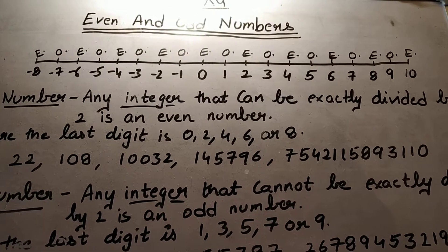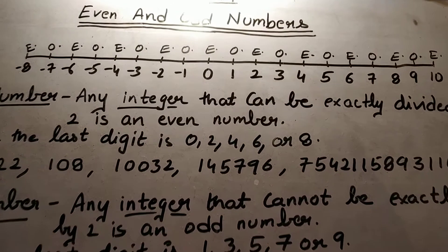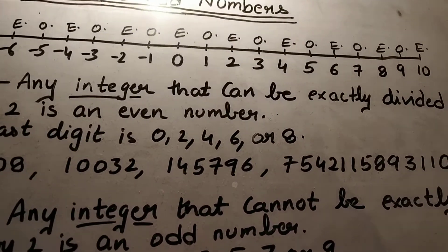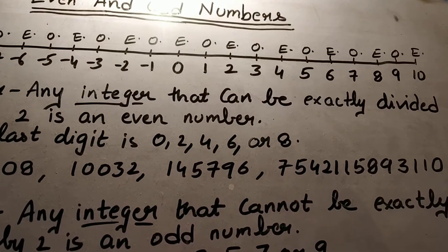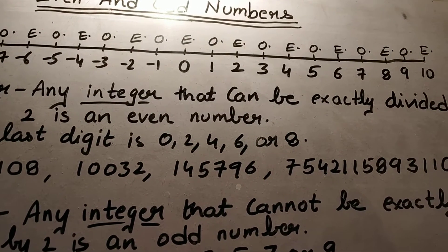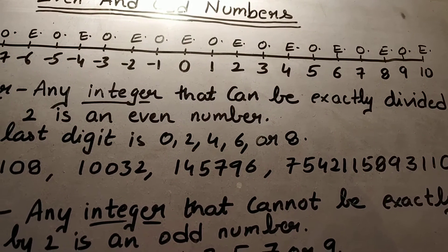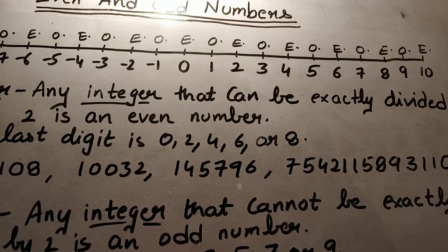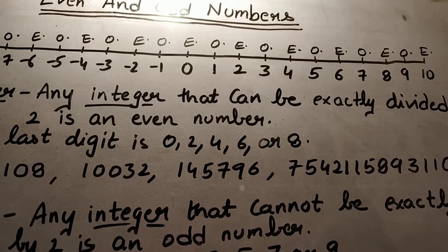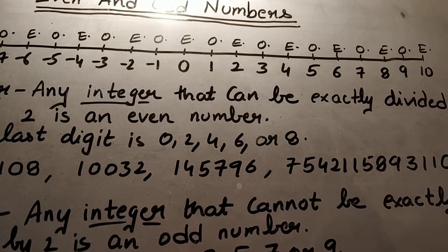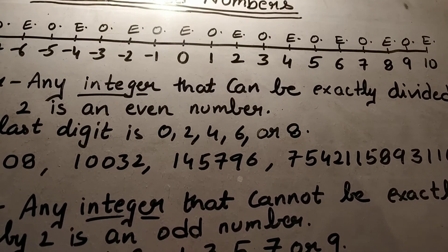As you can see, zero is in the middle of the number line, and on the right hand side you can see numbers from one to ten. Zero is an even number, and all the alternate numbers — two, four, six, eight, and ten — are all even numbers.